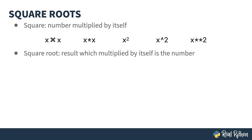A square root is the number that, when squared, gives you the original value. If y is equal to x squared, given y, what would x be? This is also noted as the square root of y. The little checkmark here means to take the square root of what is under it. This symbol — the checkmark — is called the radical sign, the radical symbol, the root symbol, the radix, or the surd.